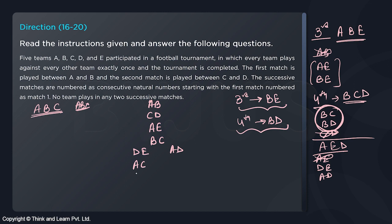For match seven, the remaining teams are B, D, and E. D and E have already played. So the next match can be either B,D or B,E. Once again we have two branches.